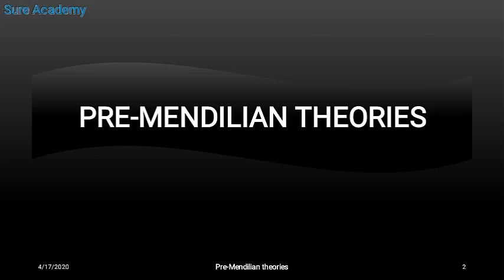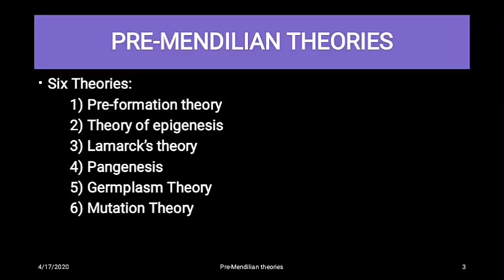Pre-Mendelian theories are those theories which were proposed before Mendel's law of inheritance — basically those proposed before 1900. There are six theories proposed before Mendel proposed his theory.